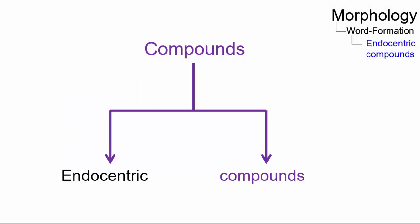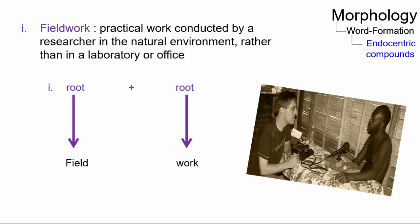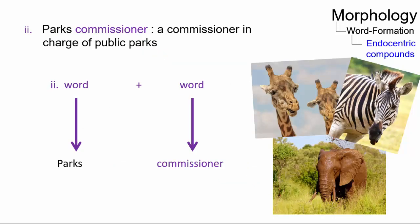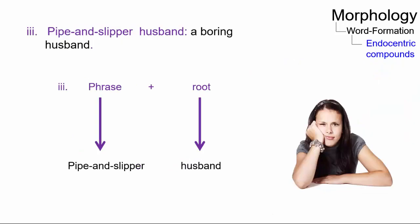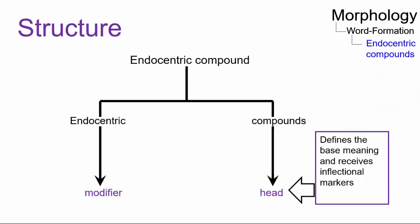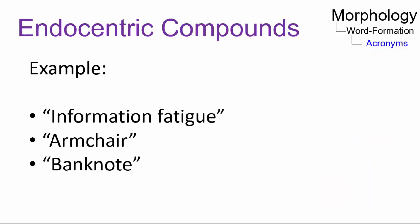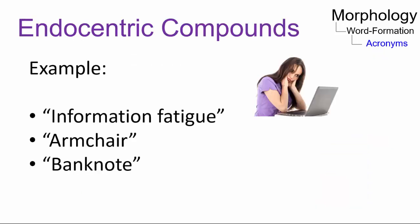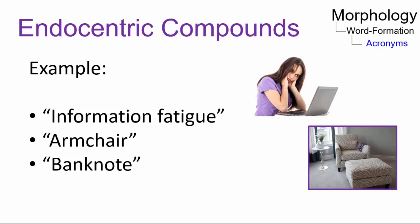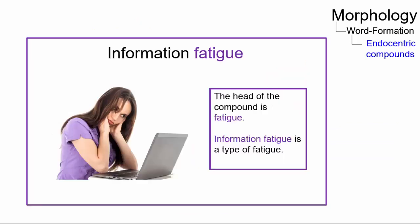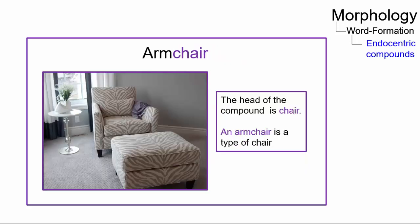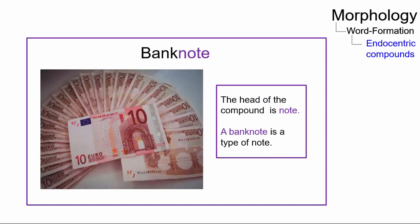An endocentric compound refers to the combination of two or more roots, words, or phrases in which the grammatical head of the compound expresses its main meaning. Examples include information fatigue, armchair, and banknote. Information fatigue is a type of fatigue, armchair is a type of chair, and banknote is a type of note.